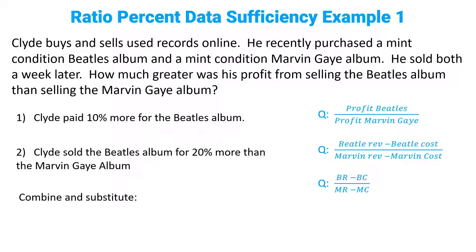Clyde paid 10% more for the Beatles album. What does that mean in math? BC equals 1.1 MC. Is that going to be enough to get all of the variables to cancel out? No way. We don't have anything on revenue at all, only on cost. That's insufficient.